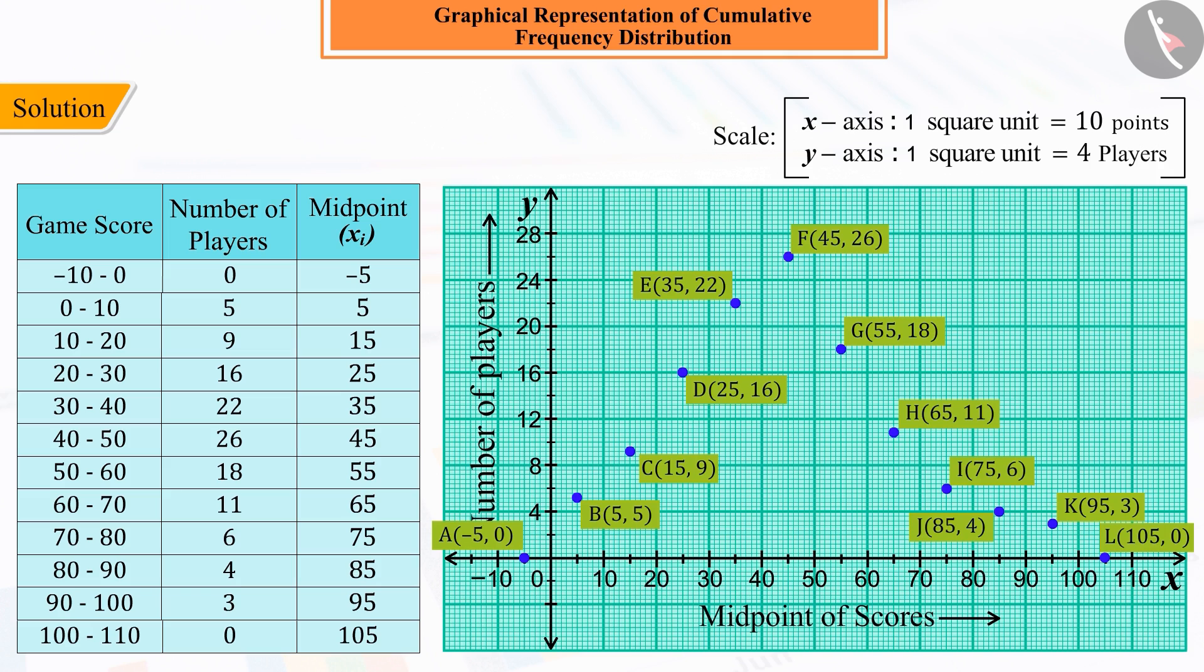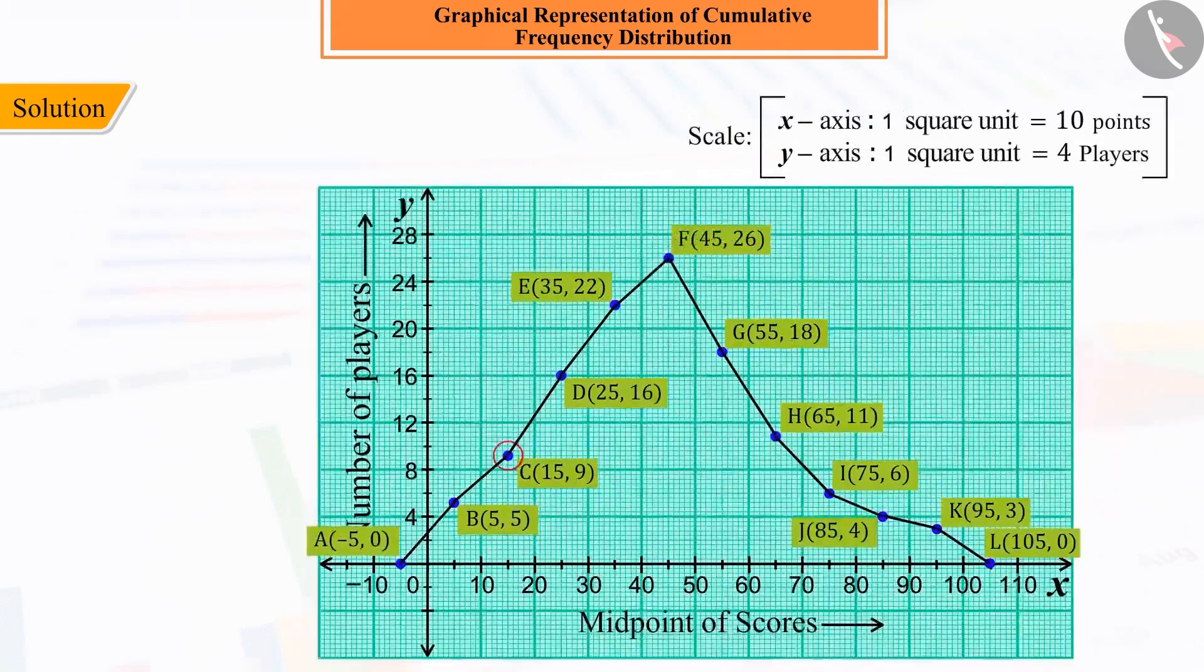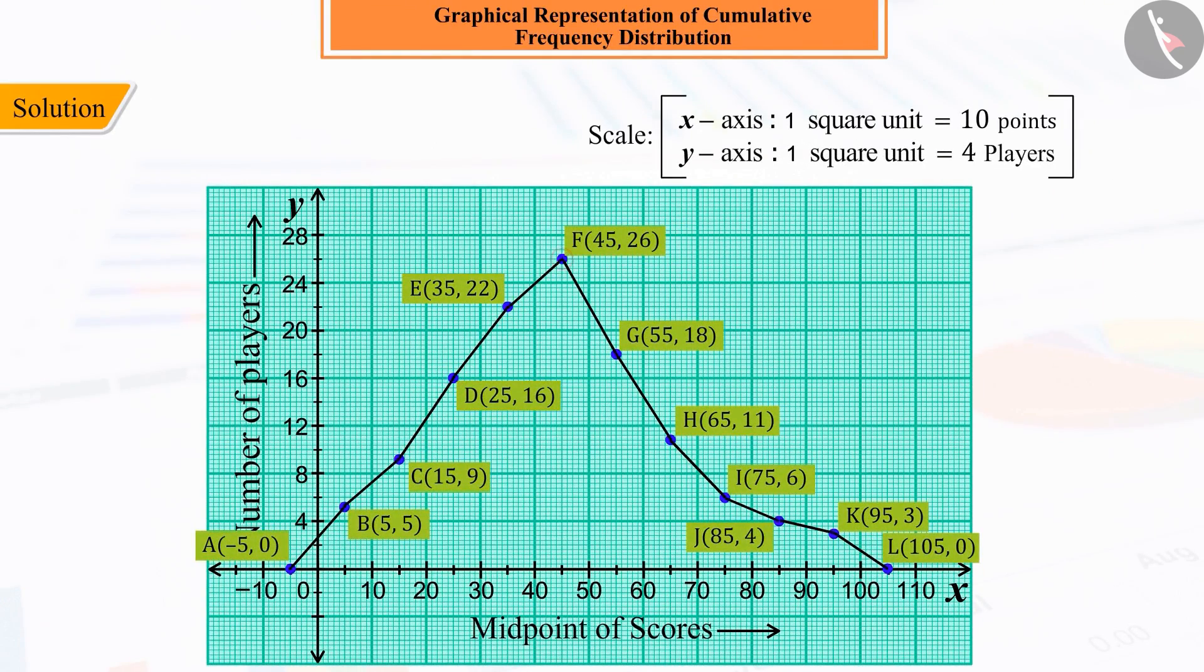Therefore, we will join all these points with the line segment and obtain the graph of the given frequency distribution: A, B, C, D, E, F, G, H, I, J, K, L.